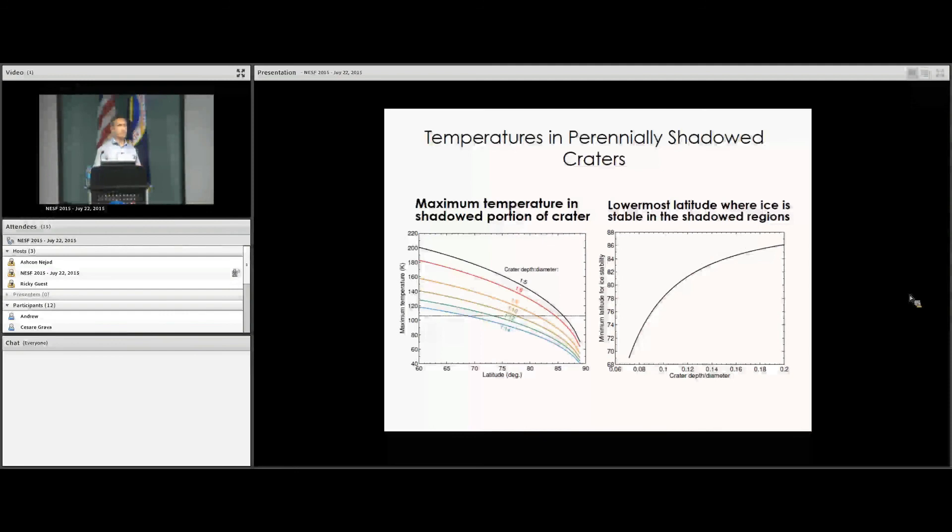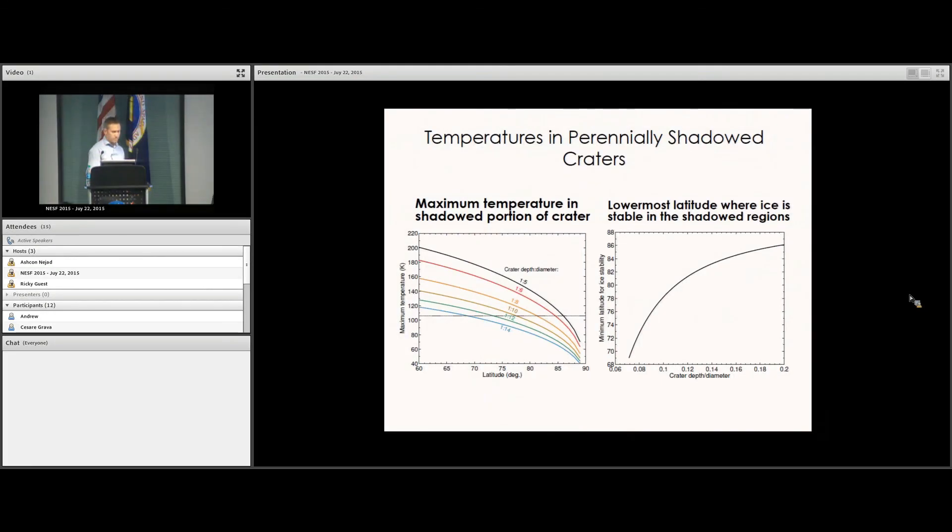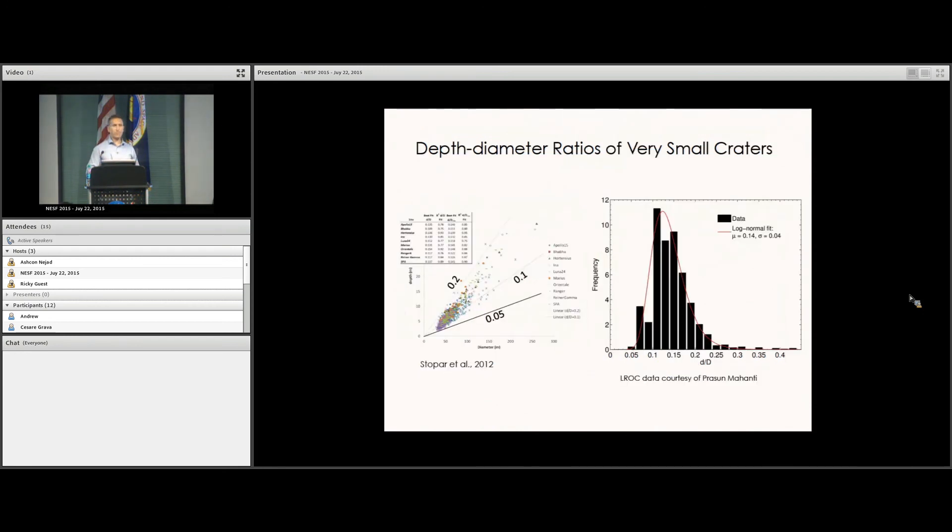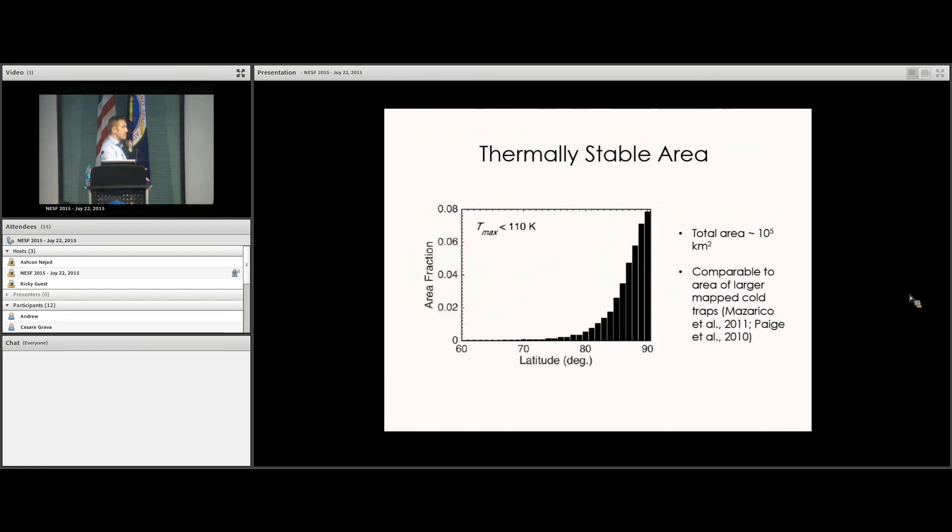What is the temperature in those permanent shadows? It turns out to depend mostly on the crater depth-diameter ratio. The canonical value most people are familiar with is maybe 1 to 5 or 1 to 6. It turns out that small craters on the moon are much shallower than we had expected, and this is based on LROC data. Shallower craters produce colder temperatures. This works in favor of micro cold traps.